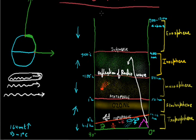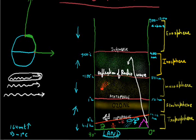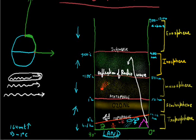So this is how I tried to explain the layers of atmosphere, which is also called the structure of atmosphere. The second important thing in this chapter is the composition of atmosphere, which we will discuss in the second part of the chapter on atmosphere. Thank you.